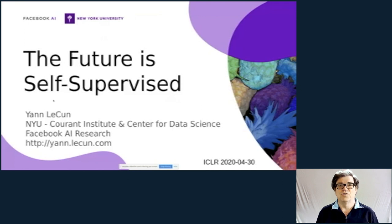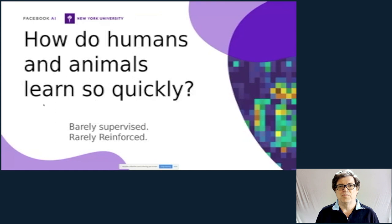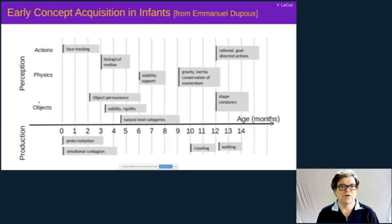Hi. The future of machine learning and AI is self-supervised. One question I've been asking myself for many years is how do humans and animals learn, in particular how do they learn so quickly, seemingly not requiring any supervision or very little and almost no interaction with the world.